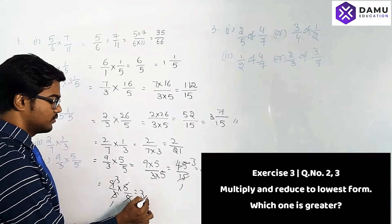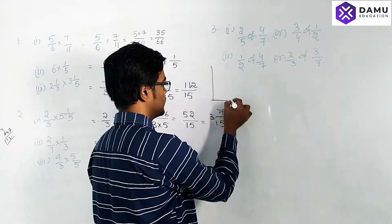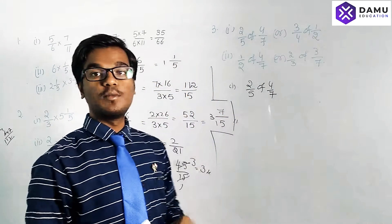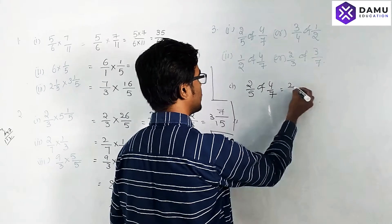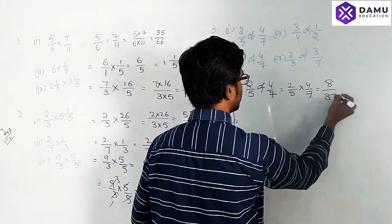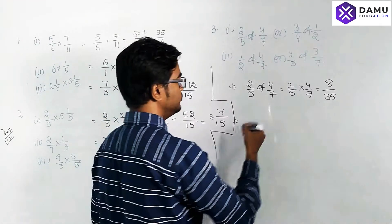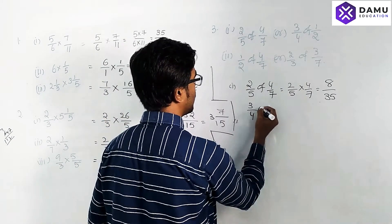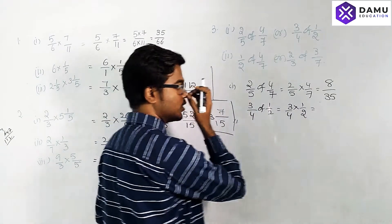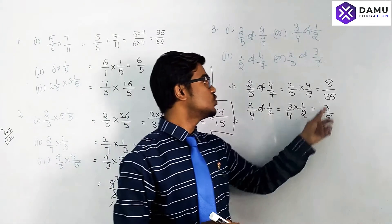Next is the third question: which numbers are greater? First one: 2/5 of 4/7 — 'of' means multiplication — so 2/5 into 4/7. Numerator times numerator, denominator times denominator: 2 times 4 is 8, 5 times 7 is 35 — giving 8/35. This is a proper fraction. Next: 3/4 of 1/2 — that is 3/4 into 1/2 — giving 3/8.